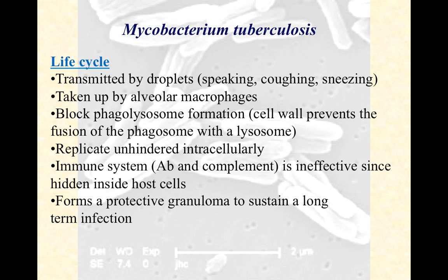It then forms a protective granuloma to sustain a long-term infection. That's what we call the tubercles — little nodules that can be seen in a chest x-ray, containing lots of white blood cells, usually surrounding an alveolus of the lungs, all containing lots of M. tuberculosis within them. But then your immune system and the bacteria come to sort of a standoff. The bacteria can't grow anymore at some point, and if they ever burst out, the immune system can at least attempt to see them and begin to clear them. So they stay hidden often for long periods of time.